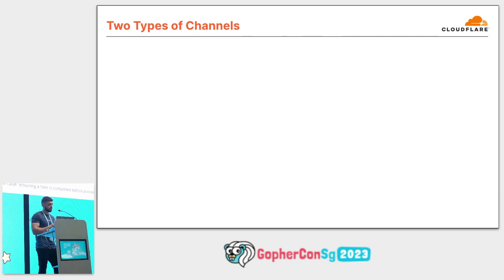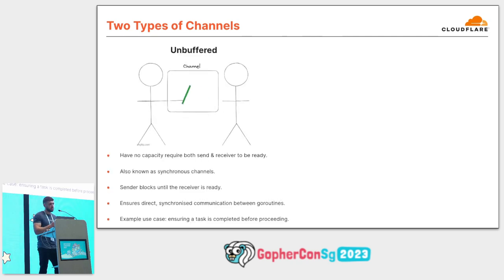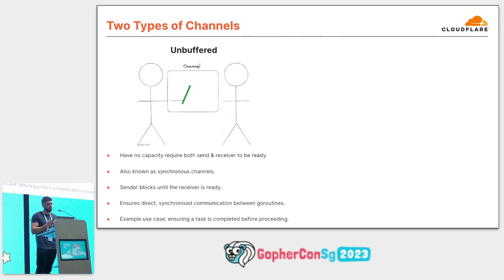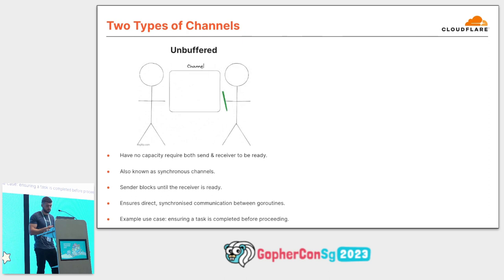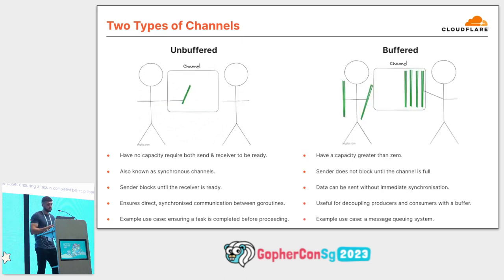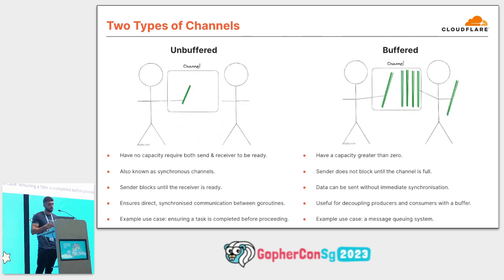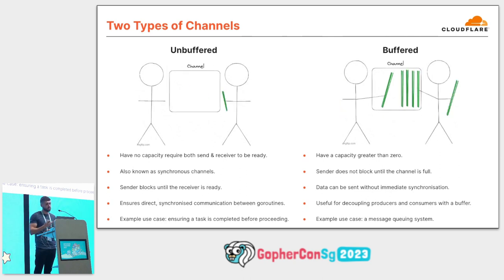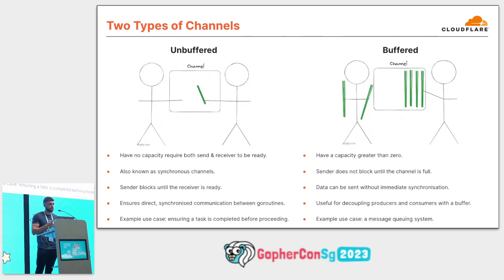One of the Go proverbs mentions that we shouldn't communicate by sharing memory — we should share memory by communicating. This emphasizes the importance of using channels to communicate between Go routines, because otherwise sharing memory can introduce race conditions or synchronization issues. There are two types of channels: unbuffered (synchronous) channels, which have no capacity and require both sender and receiver to be ready at the same time; and buffered channels, which have a capacity so if there is room, the send can take place immediately. Buffered channels are useful for decoupling consumers and producers, making them great for implementing message queuing systems.